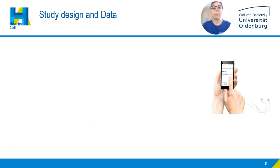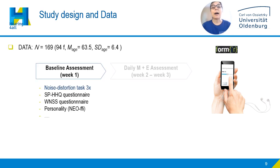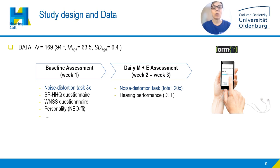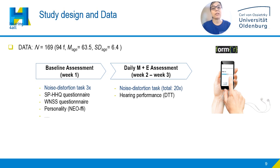We designed a mobile measure of listening preferences for noise versus distortion and included it in a larger online ecological momentary assessment study with 169 older adults with reports of hearing difficulties but not using hearing aids. They participated in a three-week study where at baseline, together with various questionnaires and tests, they performed our task three consecutive times. This task was also repeated in the two following weeks, mornings and evenings, for a total of 20 repetitions.